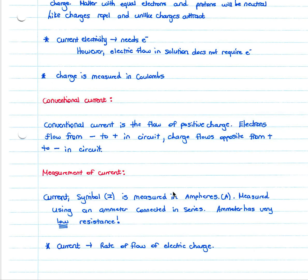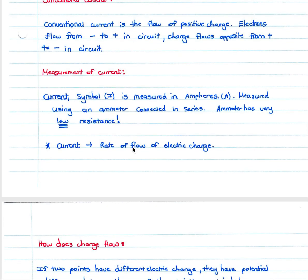Conventional current is the flow of positive charge. Electrons flow from negative to positive, but conventional current flows from positive to negative. In a series or parallel circuit, conventional current flows from the positive side of your battery to the negative side. You must know that electrons flow in the opposite direction to conventional current.